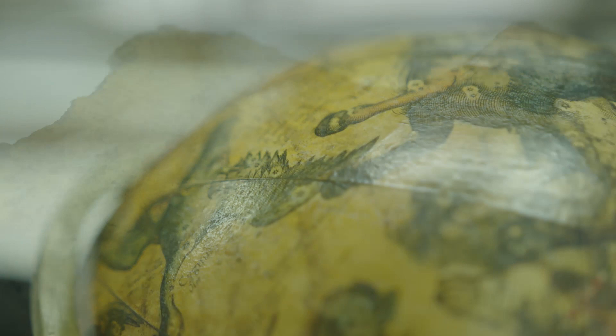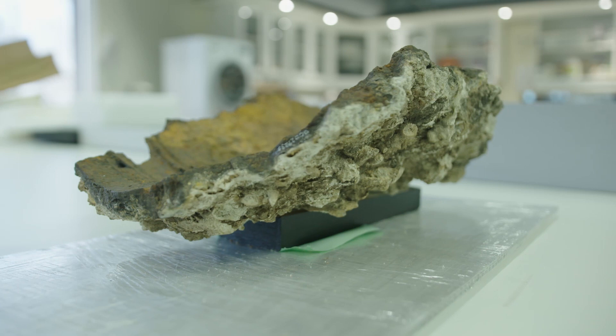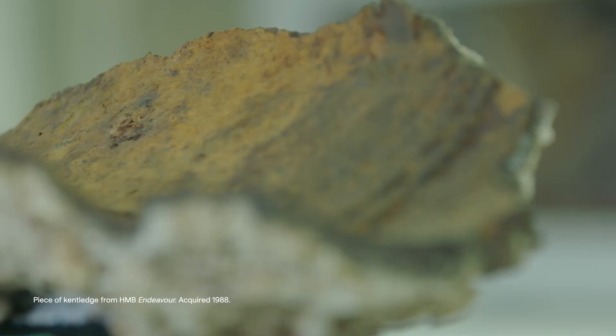This is another object from our collection, it's been selected to go on display in the Under the Southern Skies exhibition. It is a concretion removed from the Endeavour Cannon, so when the Endeavour Cannon was in the water it underwent corrosion and that's what you can see on the surface here.